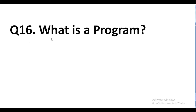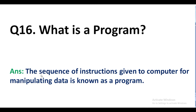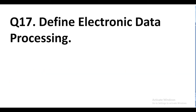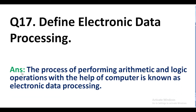Question number 16. What is a program? Answer. The sequence of instructions given to a computer for manipulating data is known as a program. Question number 17. Define electronic data processing. Answer. The process of performing arithmetic and logical operations with the help of a computer is known as electronic data processing.